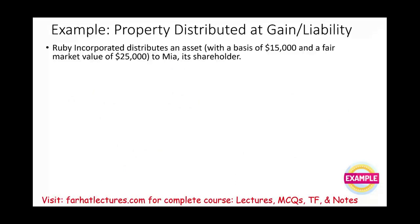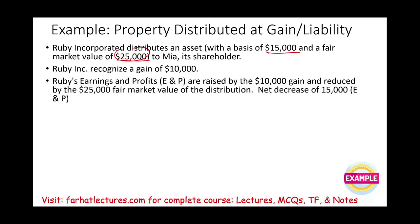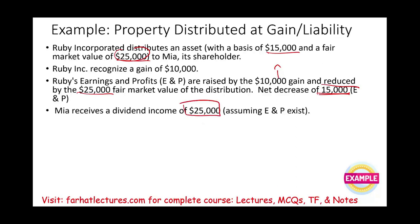Let's look at another example. Ruby Incorporated distributed an asset with a basis of $15,000 and a fair market value of $25,000 to Mia, a shareholder. There is a gain of $10,000. Ruby's E&P is raised by $10,000 for the gain, then reduced by $25,000 for the distribution — so the net decrease in E&P is $15,000. As for Mia, she received a dividend of $25,000, assuming sufficient E&P exists, which is taxable as dividend income.